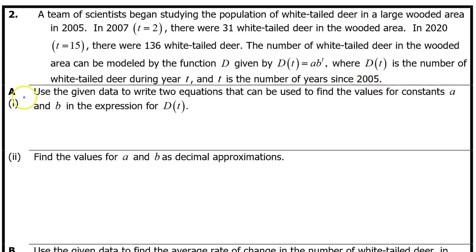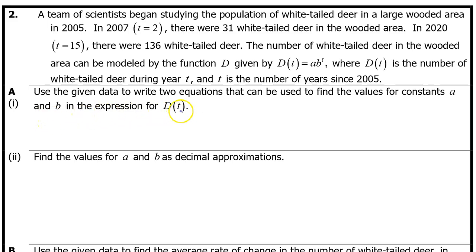The number of white-tailed deer in the wooded area can be modeled by the function d, given by d of t equals a times b to the t power, where d of t is the number of white-tailed deer during year t, and t is the number of years since 2005. Part A1: Use the given data to write two equations that can be used to find the values for constants a and b in the expression for d of t.